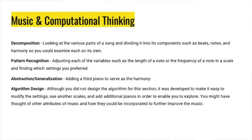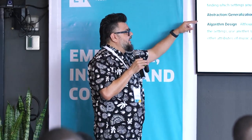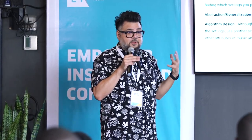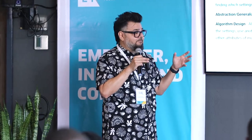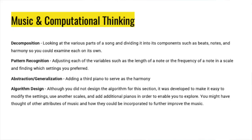Abstraction or generalization: if you want to add a harmony — say two people are singing and you want to add a third — that third person starts thinking about what notes will sound good together. That's another form of computational thinking. For algorithm design, a lot of music is actually designed by computers nowadays. In a music studio, you can change the pitch, alter things, record, edit, change scales, and add instruments — and that's all computational thinking.